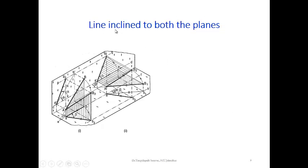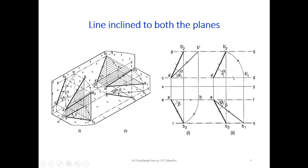This is the case where the straight line is inclined to both the horizontal plane and vertical plane. The line is inclined theta degrees to the horizontal plane and phi degrees to the vertical plane. After projections, the apparent angles are different — alpha is the apparent angle to the horizontal plane and beta is the apparent angle to the vertical plane. In the first step, the line is assumed inclined to the horizontal plane and parallel to the vertical plane; in the second step, the line is inclined to the vertical plane and parallel to the horizontal plane. These two steps are merged to get the final front view and top view.